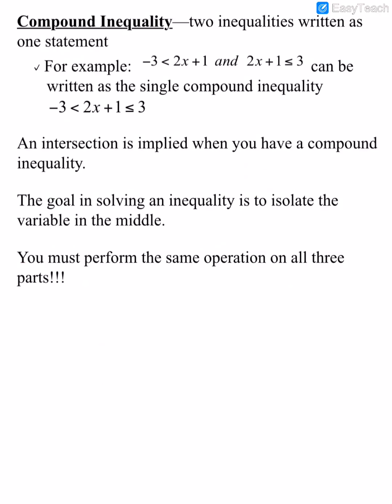Compound inequalities are two inequalities written as one statement. For example, negative 3 < 2x + 1 and 2x + 1 ≤ 3 can be combined into a single compound inequality. To solve a compound inequality, the goal is to isolate the variable in the middle, and we must perform the same operation on all three parts of the inequality.